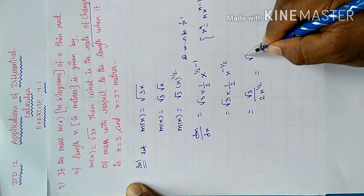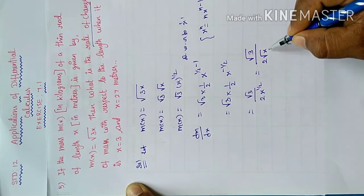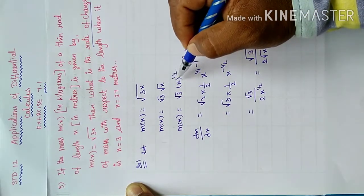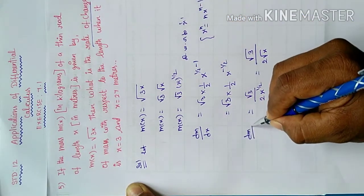Write root 3 by 2 into root x. That is 1 by root x. dm by dx.